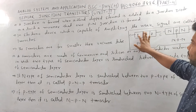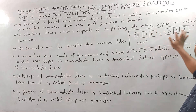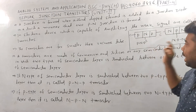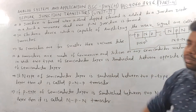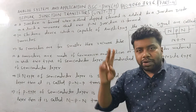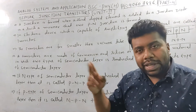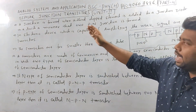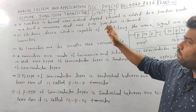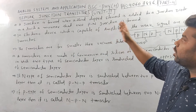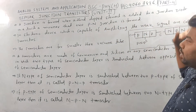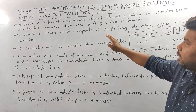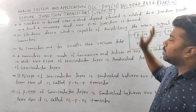What is the transistor? It is PNP and NPN. This junction is formed when a third doped element is added to the junction diode, in such a manner that two PN junctions are formed.